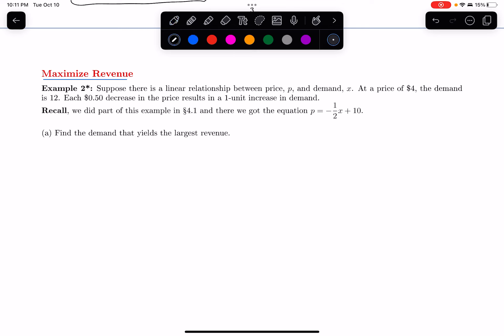So the problem says, suppose there's a linear relationship between price, which is P, and demand, which is X. At a price of $4, the demand is 12. So when they charge $4 for this item, 12 people or consumers are going to buy it.